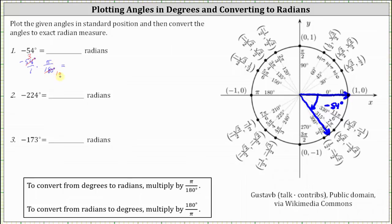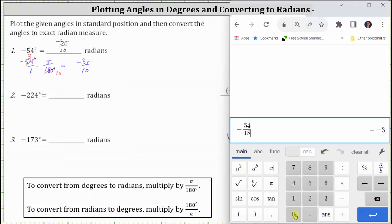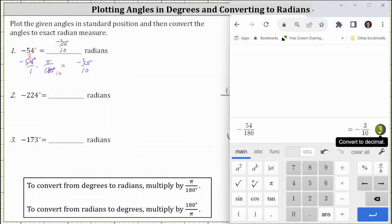Multiplying, we have negative 3 pi divided by 10 radians. I do want to show how we can check the fraction of negative 3 tenths using the Desmos Scientific Calculator. We leave off the pi and enter negative 54 divided by 180. Next, we click the Convert to Fraction button on the far right, which does verify the fraction of negative 3 tenths.